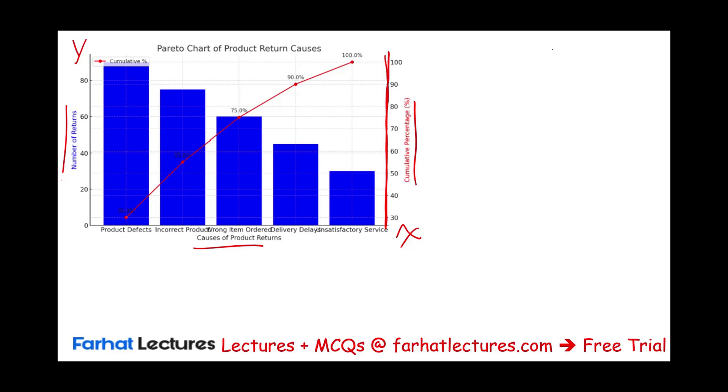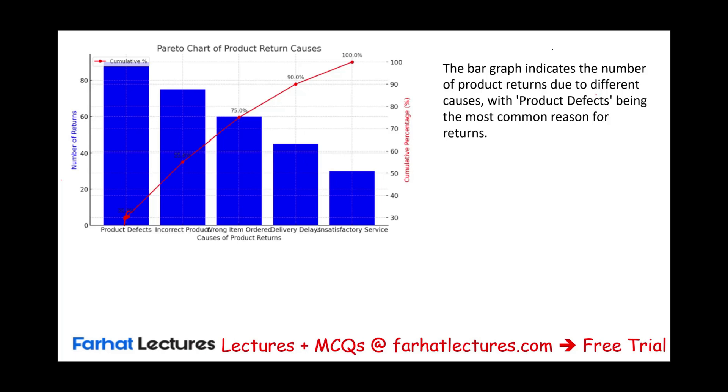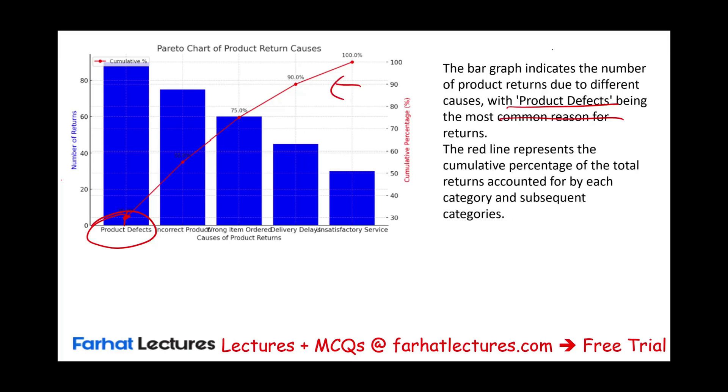We remember those individual percentages and the cumulative. For example, the first one product defect was 30%. We put a dot here. Then the cumulative effect of the incorrect product is 55. Then the wrong item ordered was an additional 20%, which is 75 cumulative, then 90, then 100%. Then we draw a line. This is how we compute the graph, and this is the graph itself. On the exam, you might have to know how to read the graph.